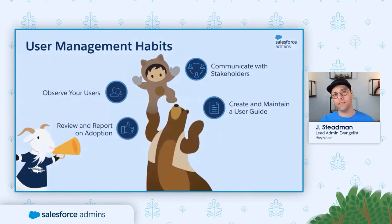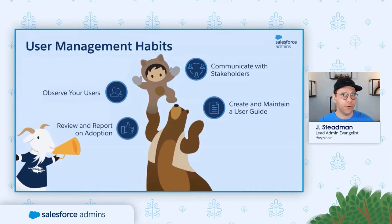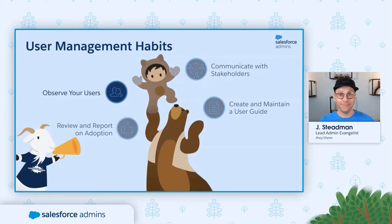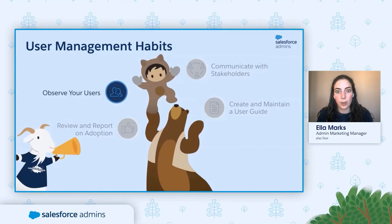Every core responsibility is comprised of habits. A habit is a recurring action taken consistently over time. There are four habits underlying the user management core responsibility. Let's take a look at each one in turn. Our first habit is observe your users. Let's discuss why user observation is so important.